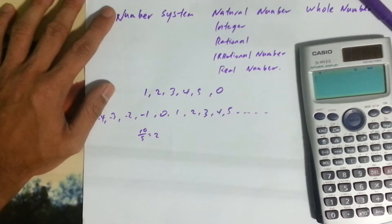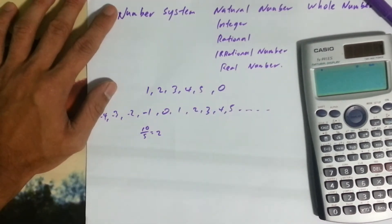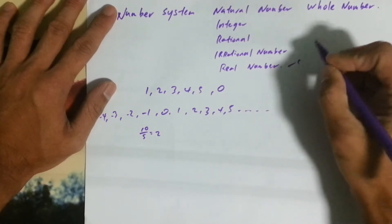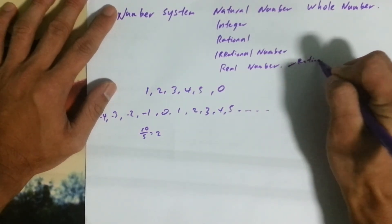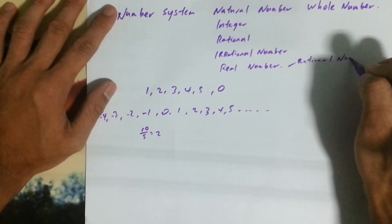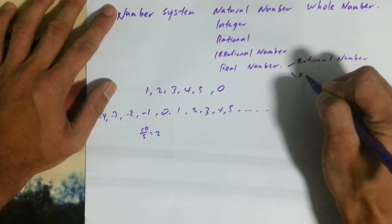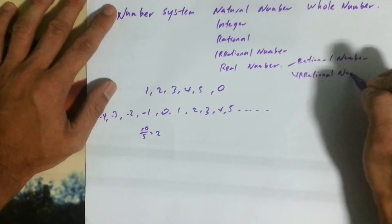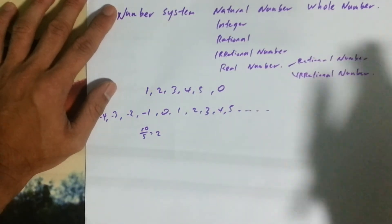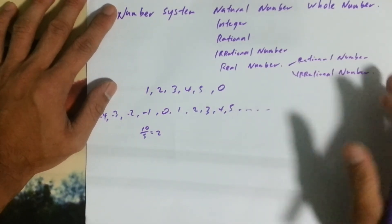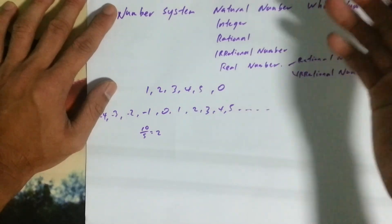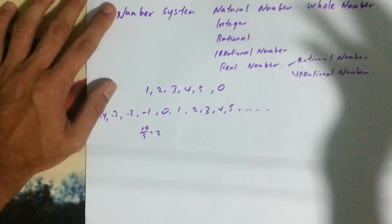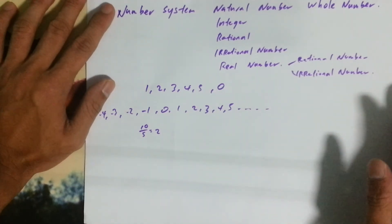So next we go to the last one, which is real numbers. Real numbers consist of rational numbers and irrational numbers. Real numbers are basically everything over here: natural numbers, integers, rational numbers, and irrational numbers. That's all, thank you very much.